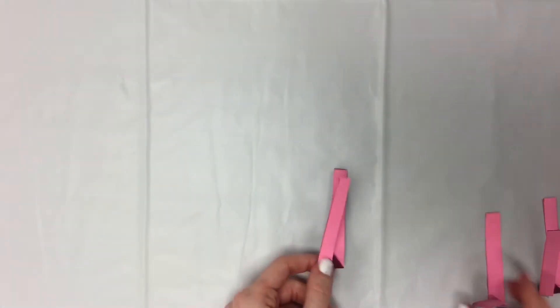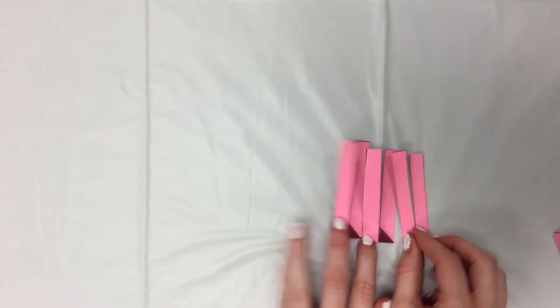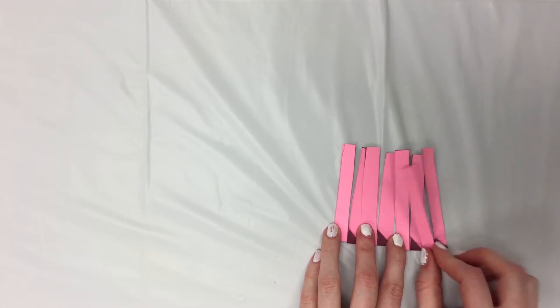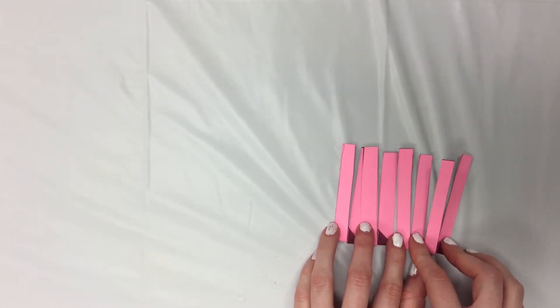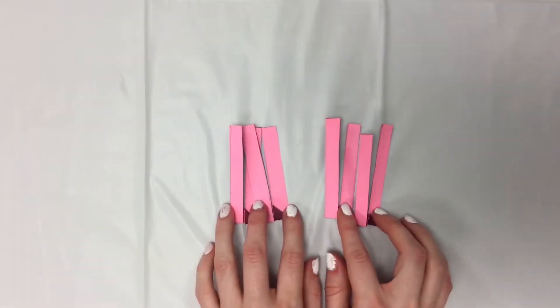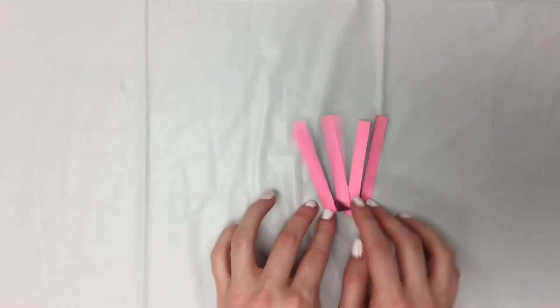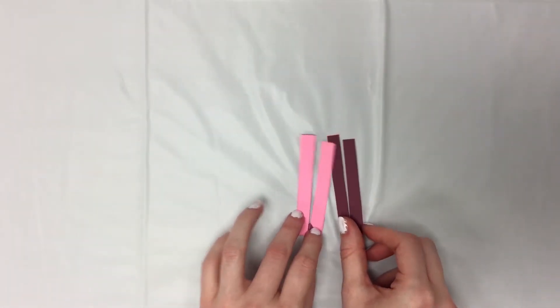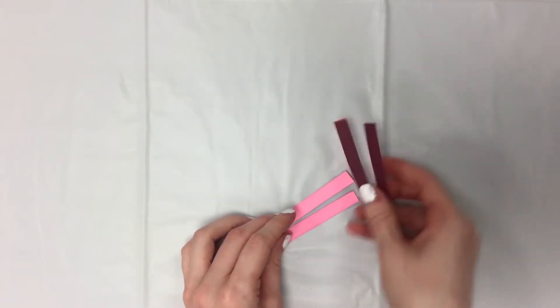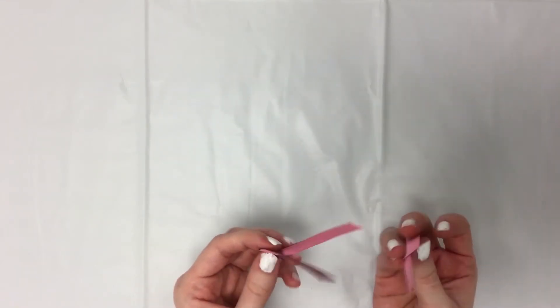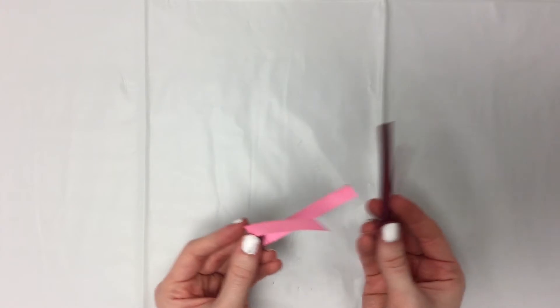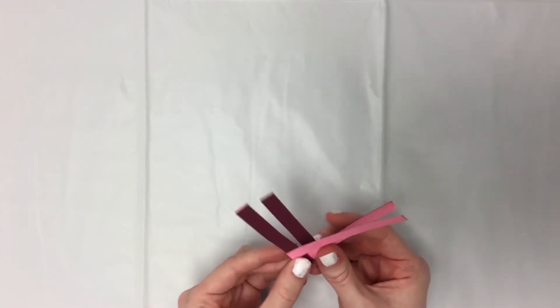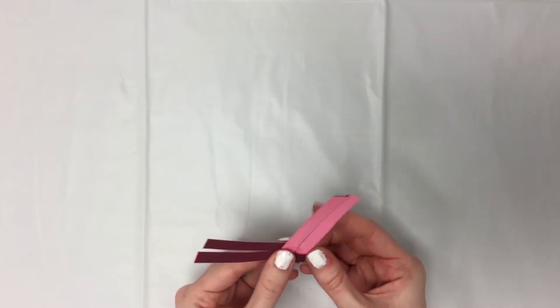And now once you have your four pieces folded, these are the pieces we're going to use to weave our heart. So let's start with two. We're going to flip one of them over because we want our heart to be alternating colors. So to weave them, you're going to just slide them together and look at each row.